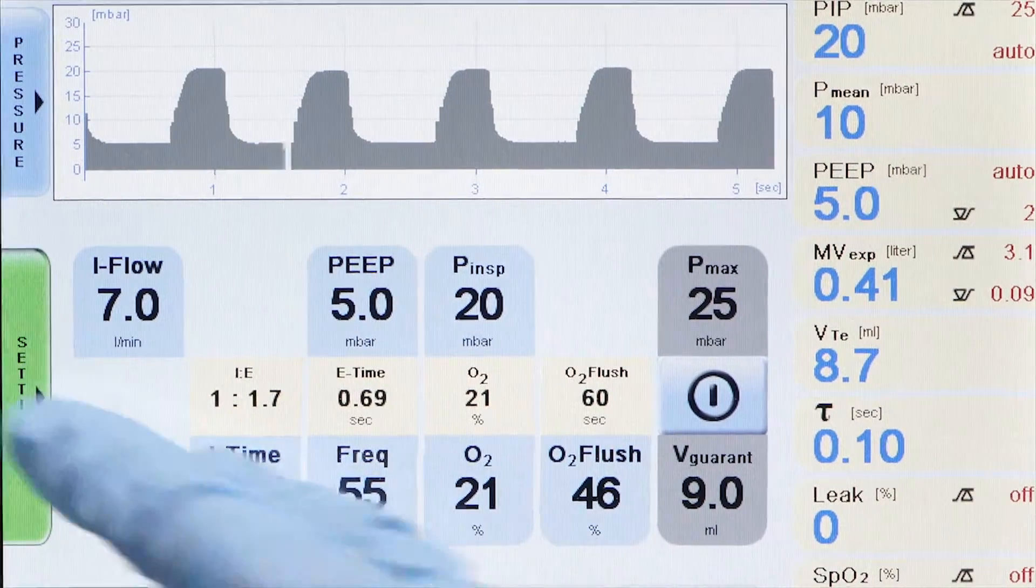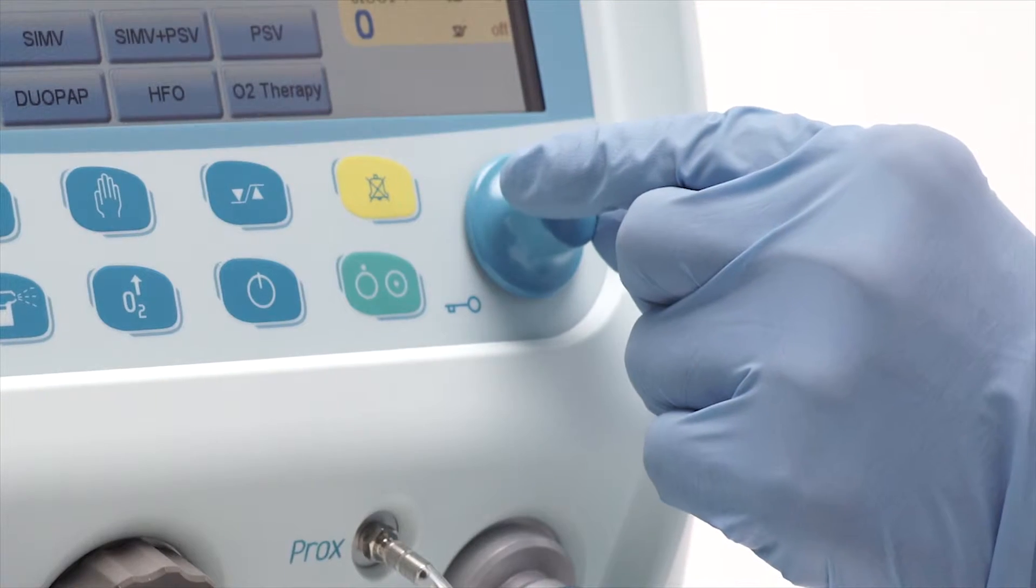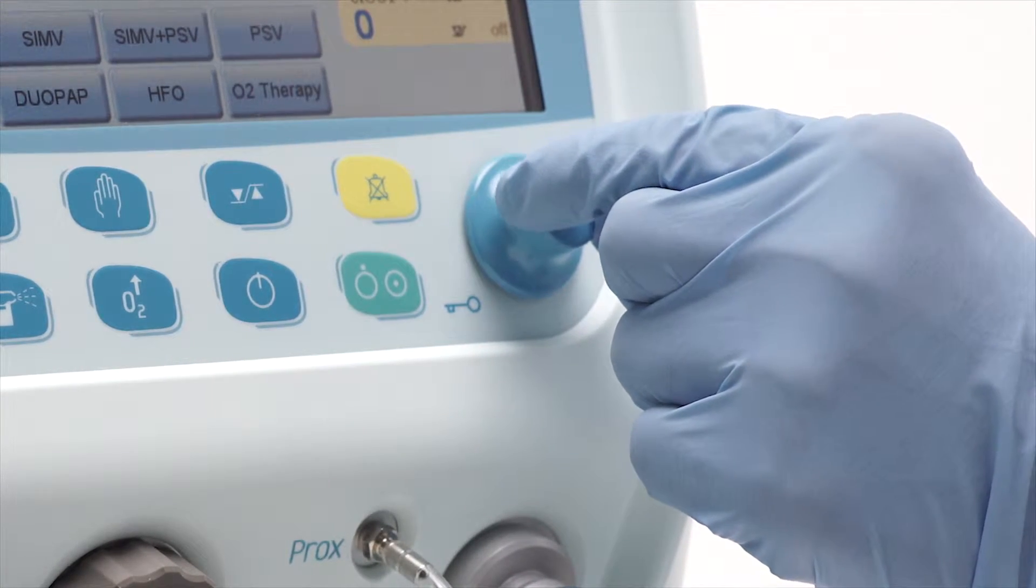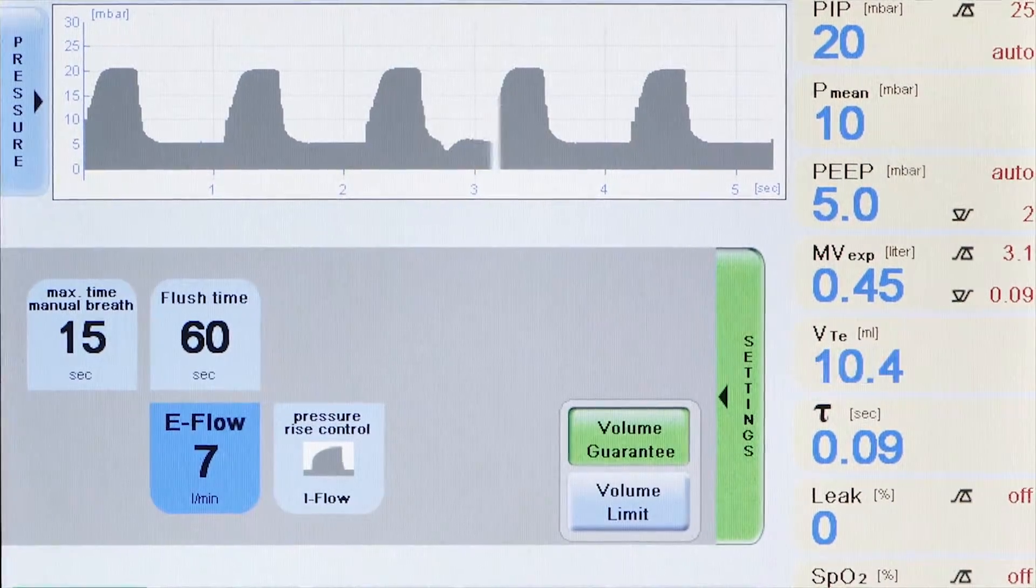eFlow. This should be set either the same as iFlow or about two-thirds of it. It maintains the PEEP level in between the mechanical breaths. For neonates, this is usually set to 6 liters per minute.